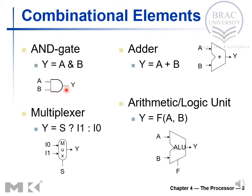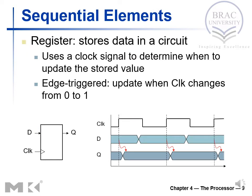Combinational elements and gates: with two inputs A and B, an adder generates A plus B. A multiplexer, based on the selector input provided, outputs either I0 or I1. An ALU, given inputs A and B, performs an operation based on the control signal and generates the output accordingly.